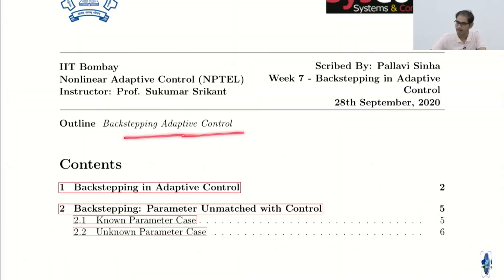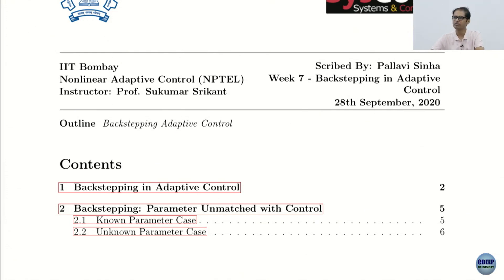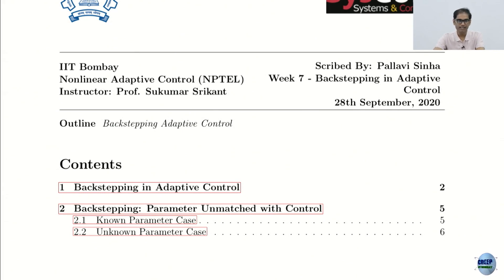What we want to look at briefly is what is done in an adaptive control course — specifically backstepping adaptive control. You already know what backstepping is. The name 'backstepping' came from the KKK: Kanellakopoulos, Kokotovic, and Krstic. Krstic is credited with naming it, though the method was known before that. He is one of the key researchers in adaptive control. The entire concept and utility of backstepping came from adaptive control — not the other way around.